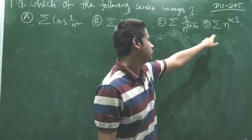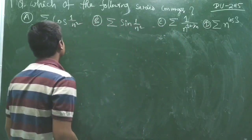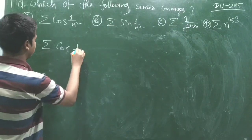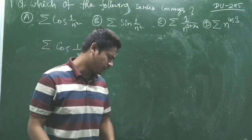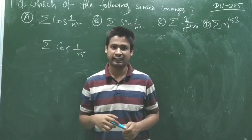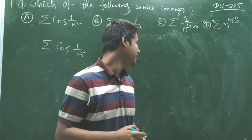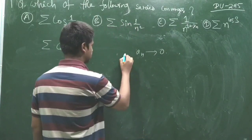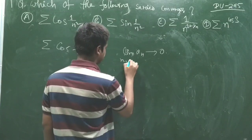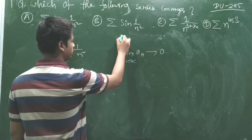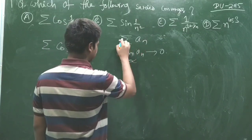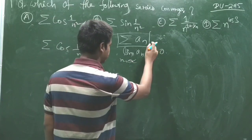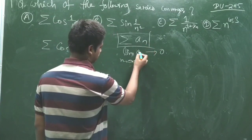For the first series, the even term is 1/n². Now, for a series to converge, a necessary condition is that the general term aₙ must go to 0 when the limit n tends to infinity. If a series is convergent, the first important condition is that this limit must go to 0.